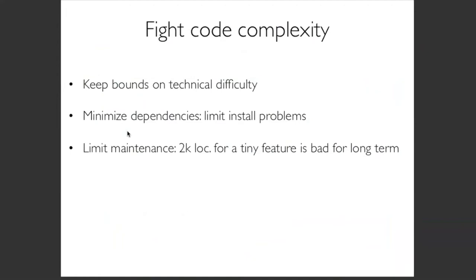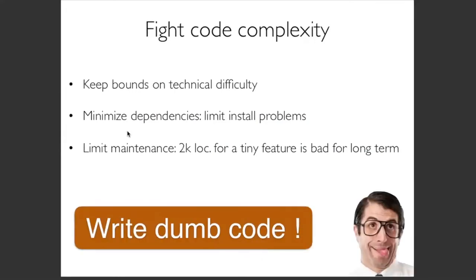In neuroscience, our postdocs and PhD students don't have ten years of experience writing advanced C++ code. Maybe they've been trained in MATLAB. We try not to ask too much in order for people to contribute — the technical difficulty should be limited. When people write increasingly complex code, I tell them: imagine you had to read this code two years ago when you started using Python — could you? If no, that's a problem. Write simple code. It's perfectly fine to write 'dumb' code because that helps others maintain it.